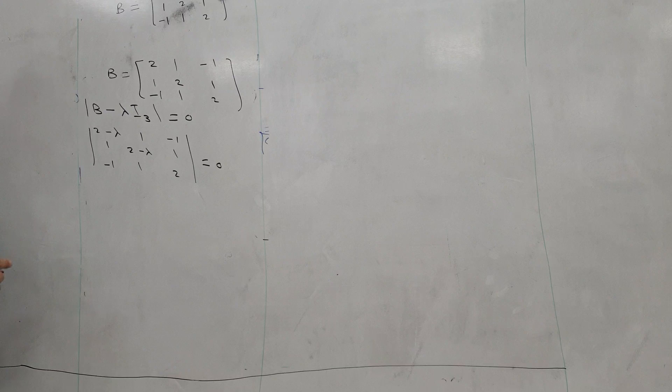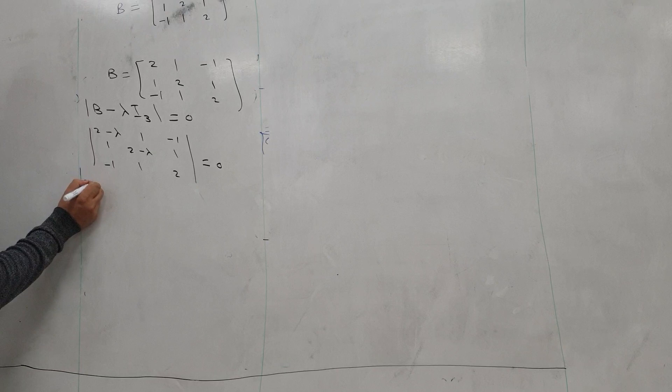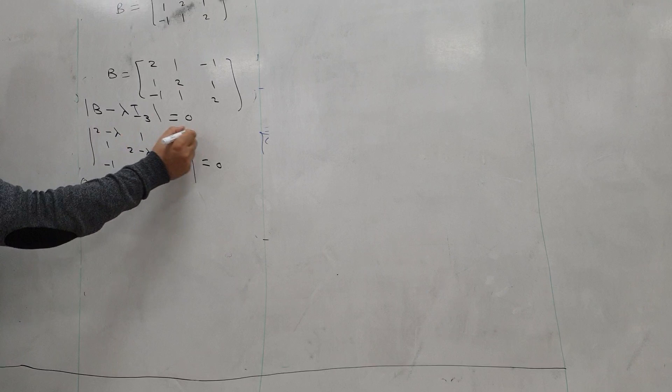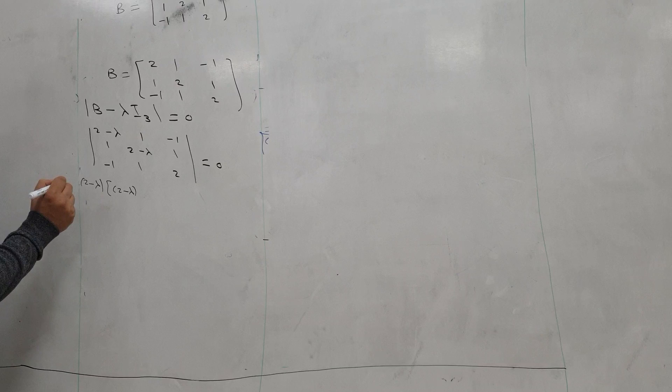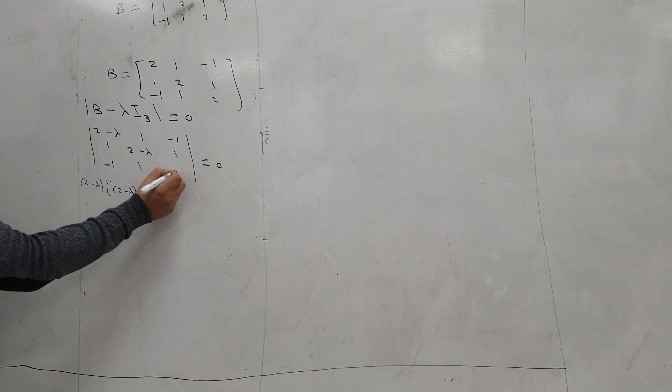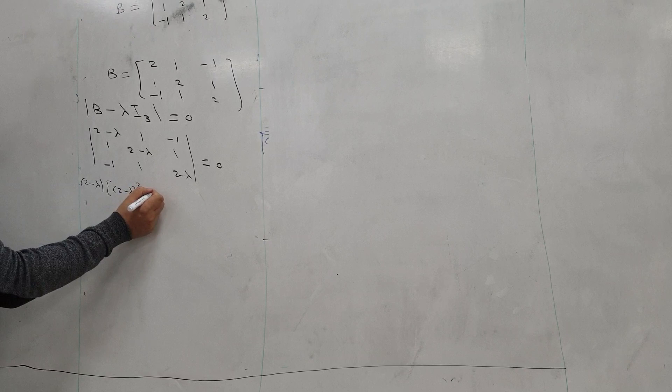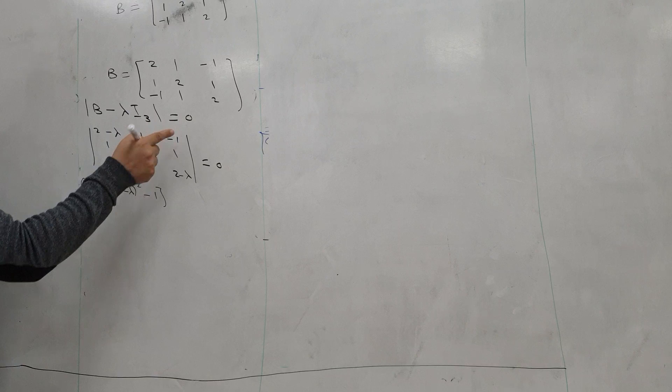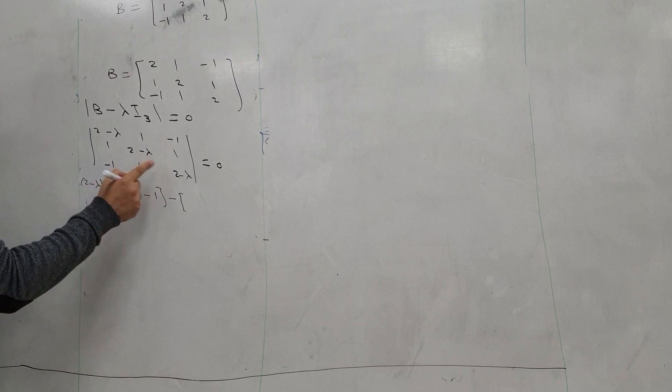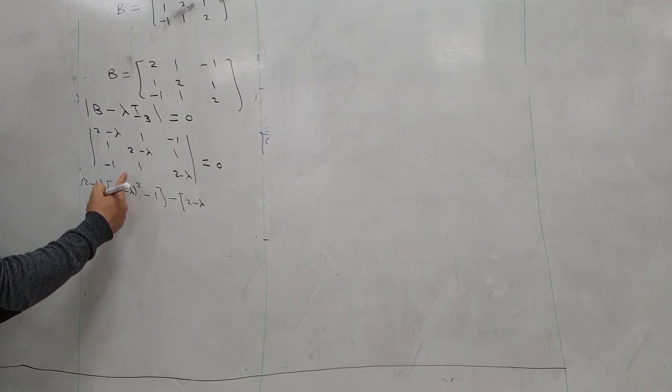To evaluate this determinant, we will expand along the first row. So it will be: 2 minus lambda, multiplied by the minor obtained by removing its row and column, giving (2 minus lambda) squared minus 1. The sign pattern is plus, minus, plus, so minus 1 multiplied by the next minor.